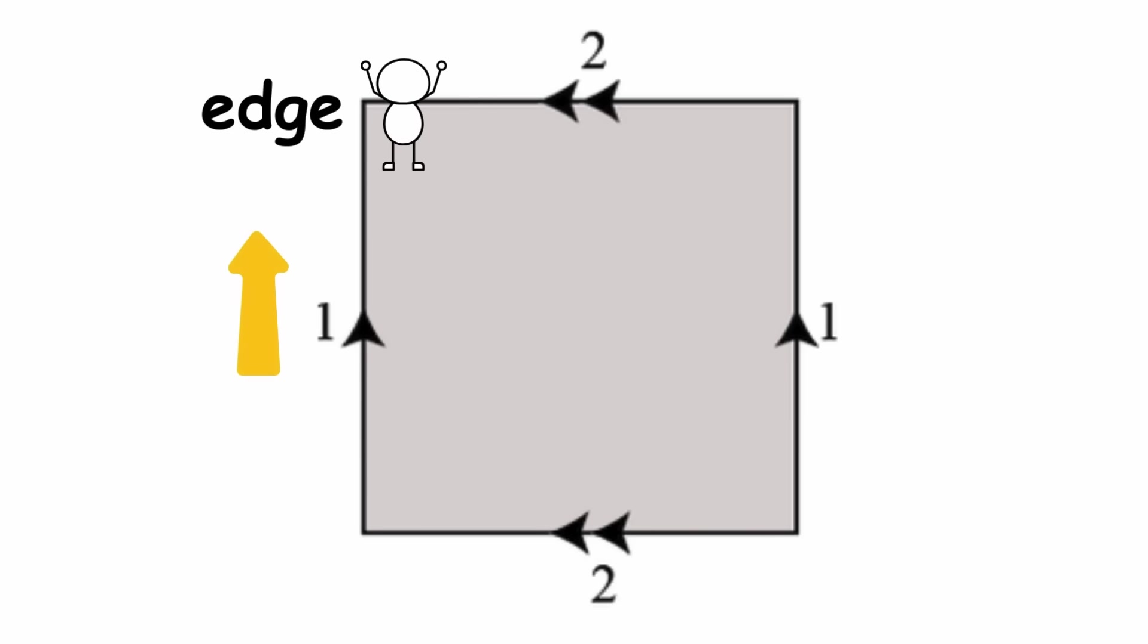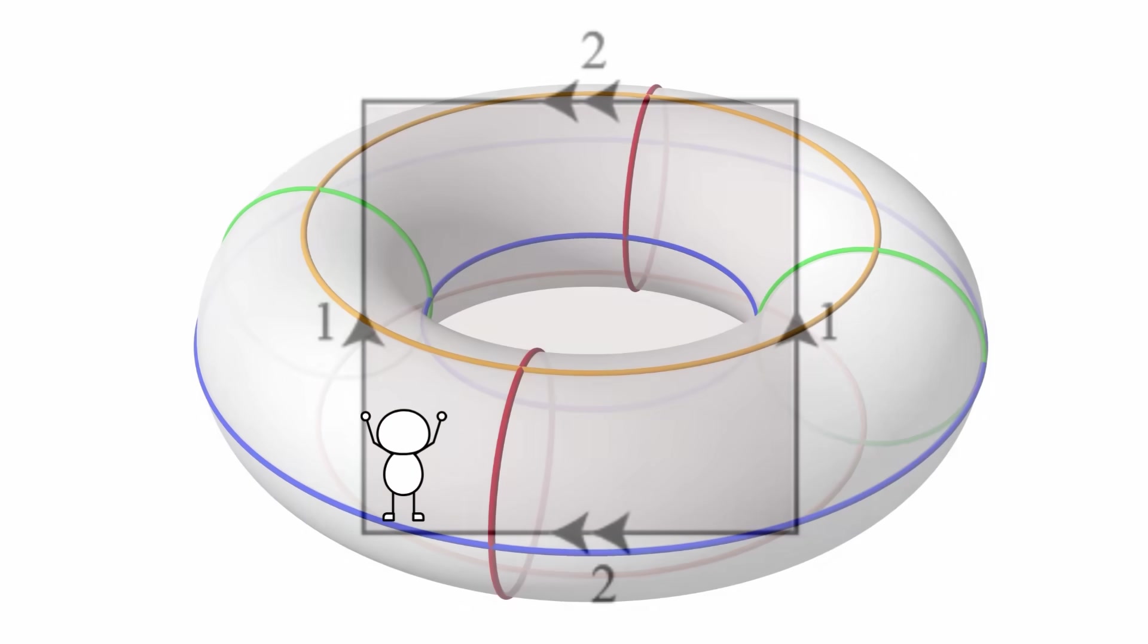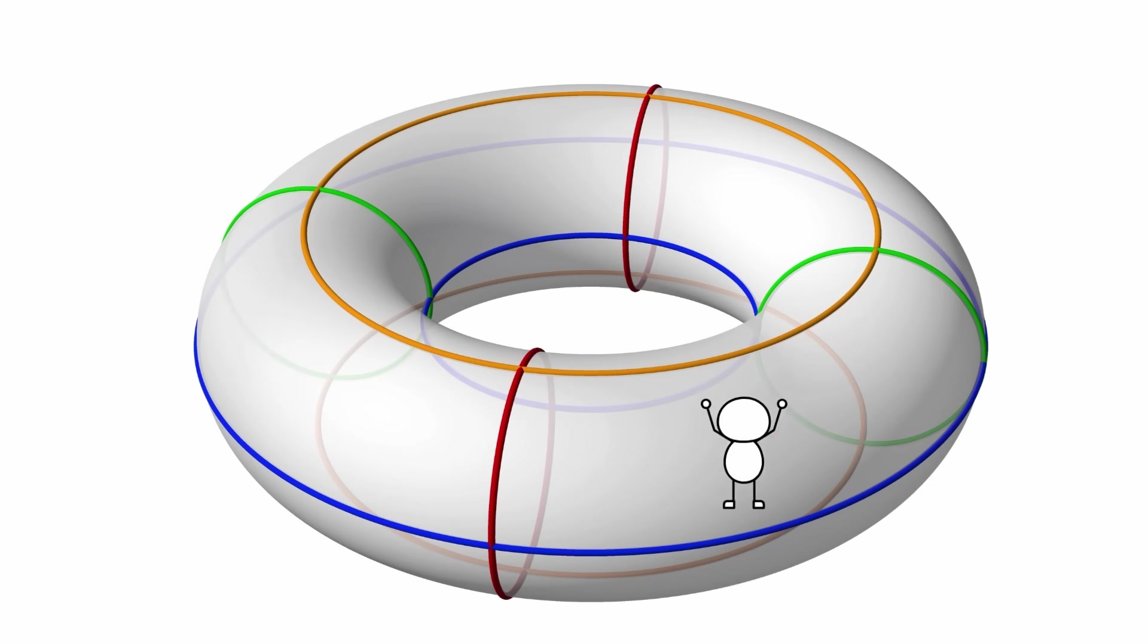If it keeps traveling upward, it'll just loop back to where it began. The same for traveling rightward. The creature's universe is finite, but it has no bound.